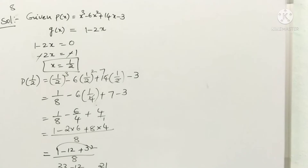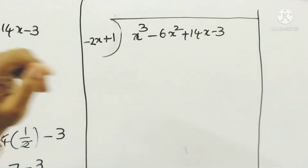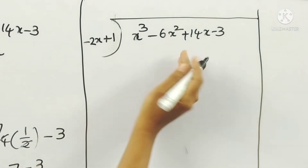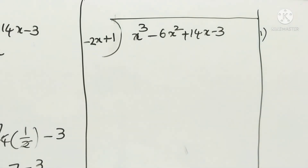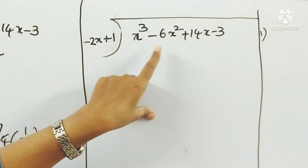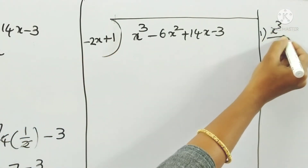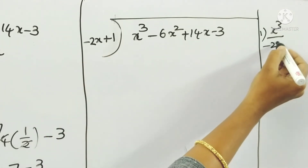Now we have to check it by doing the long division process. In the long division, g(x) is 1 minus 2x, but written in order of degree as minus 2x plus 1. This is the dividend and divisor. We have to find out the quotient and remainder.